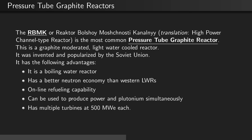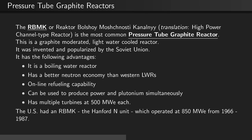It also has multiple turbines, each at 500 MW electric. The United States also had an RBMK — the Hanford N unit — which operated at 850 MW electric from 1966 to 1987.